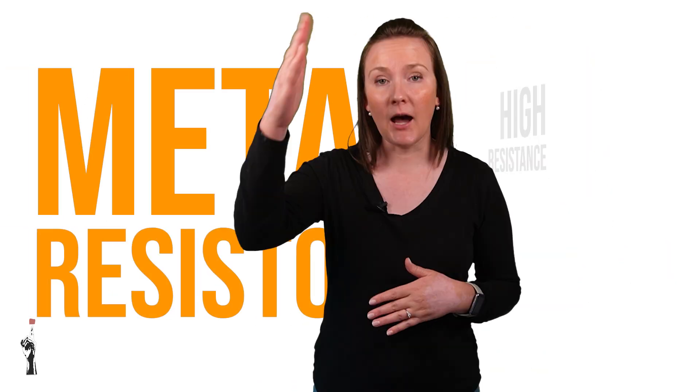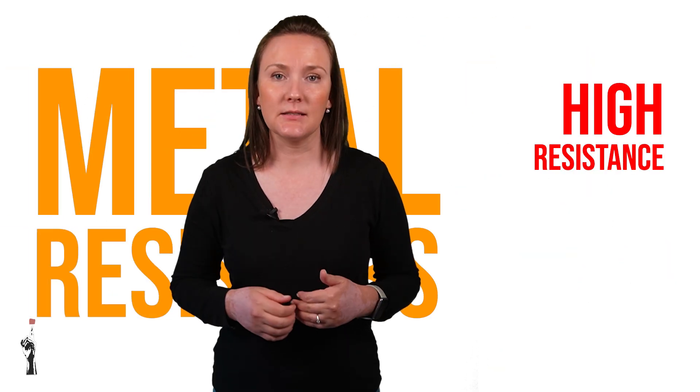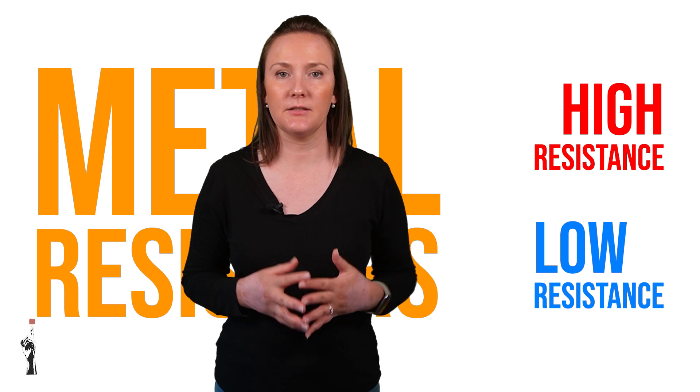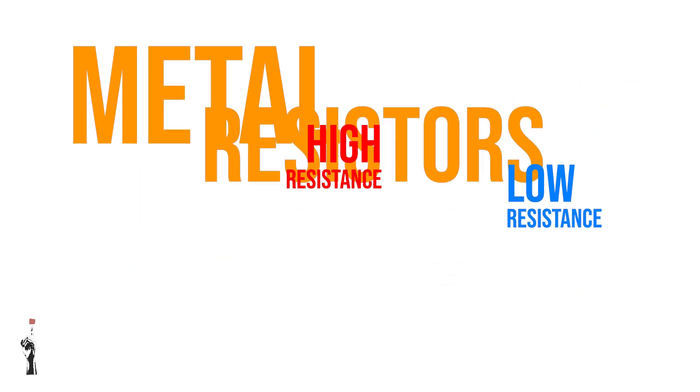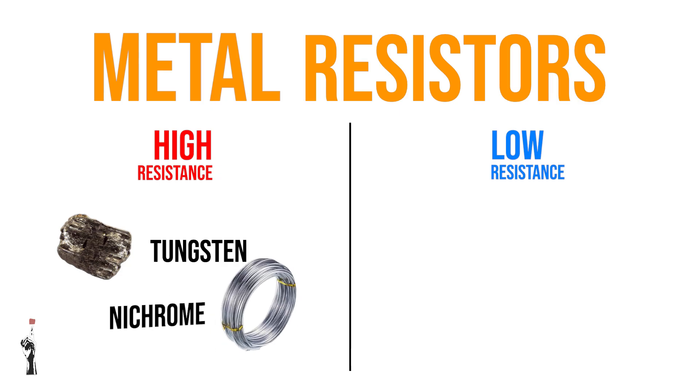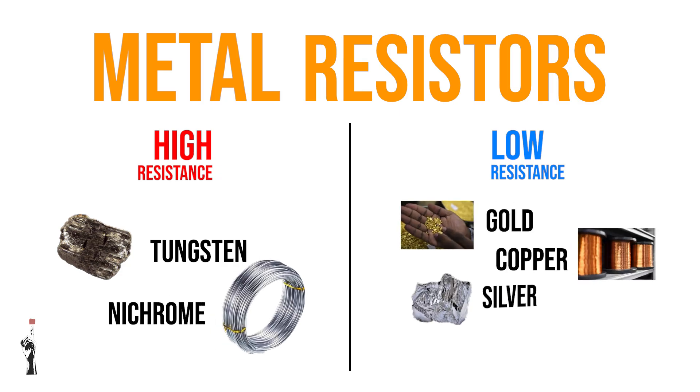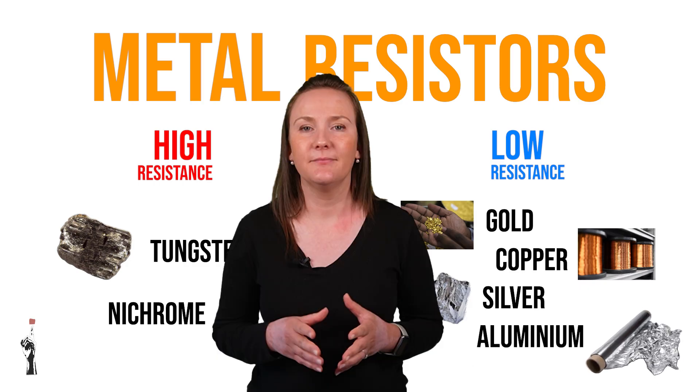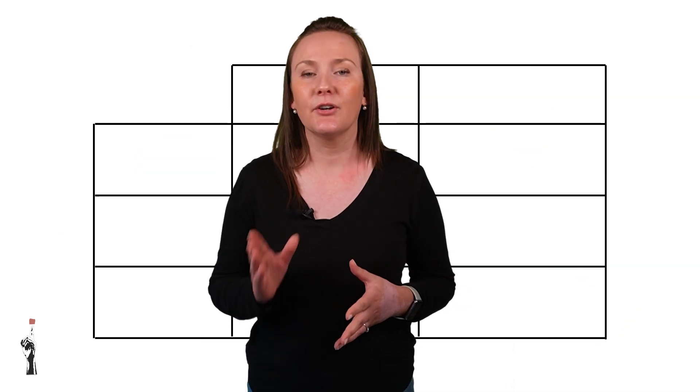Great. Now, before we move on, we need to understand that in a circuit, there are metal resistors that give off high resistance and others that give off low resistance. Examples of metals that give high resistance are tungsten and nichrome. And metals that give low resistance are like gold, copper, silver and aluminium.